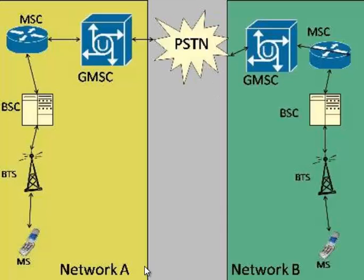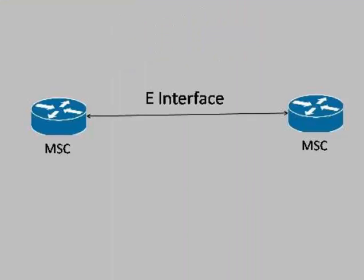This diagram demonstrates the differences between two networks. Network A could be referenced as the B Mobile network, and Network B as the Digicel network. The PSTN network is connected to both gateway mobile switching centers to route calls from Network A to Network B, interconnecting through the gateway mobile switching center and the public switching telephone network. The MSC is depicted by two routers as it routes call processing operations, and the interface between mobile switching centers is the E interface.